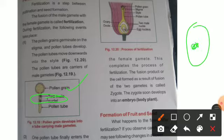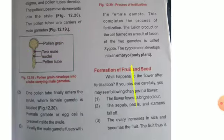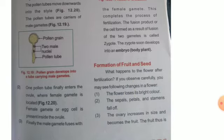Inside a cell, the dark structure in the center is called the nucleus, and the nucleus contains all the information of a cell that helps in building it. The pollen tubes carry the male gametes, and after carrying them, one pollen tube enters the ovule where the female gamete is located.